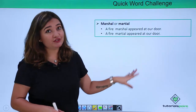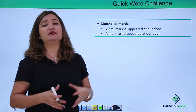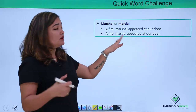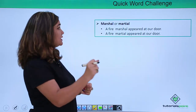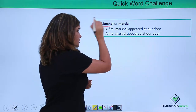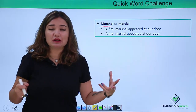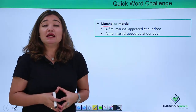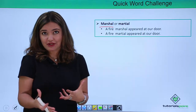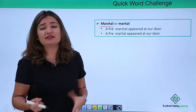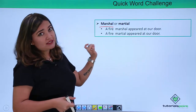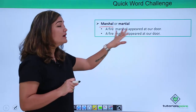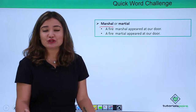Now how about these two words: 'marshal' and 'martial'? Again, same pronunciation but a huge potential for confusion. In 'A fire marshal appeared at our door,' which is the right version? 'Marshal' — M-A-R-S-H-A-L — means an officer of a particular authority. But 'martial' — M-A-R-T-I-A-L — relates to war, fighting, army, or defense. So here, 'fire marshal' means a fire officer, making 'marshal' the right choice. No more confusions!